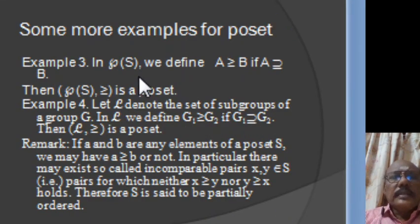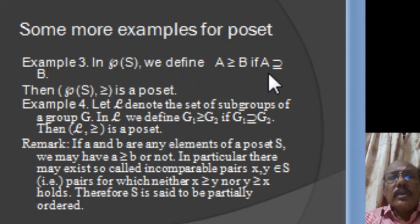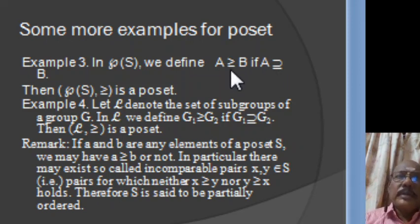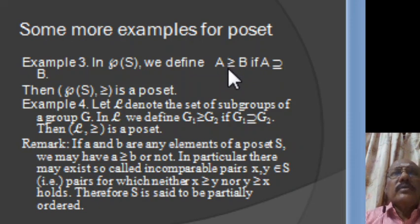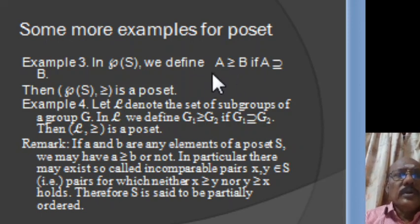Now if S is a set, then P(S) is the power set, that is the set of all subsets of S. In P(S), we define A ≥ B if A contains B. With respect to this relation, A contains A, therefore A ≥ A, satisfying reflexivity. If A contains B and B contains A, then A = B, satisfying anti-symmetry. If A contains B and B contains C, then A contains C, satisfying transitivity. Therefore, the ordered pair (P(S), ≥) is a poset.